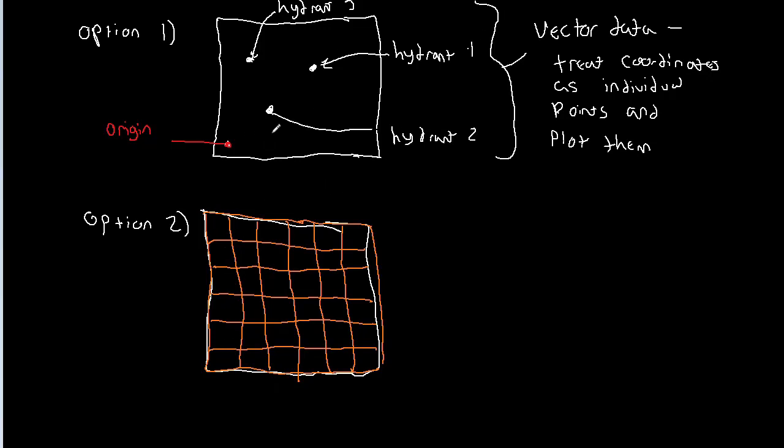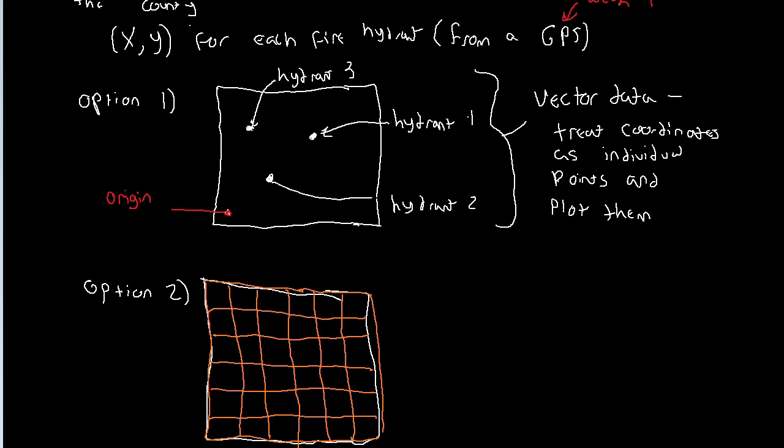And so rather than taking the x and the y of each hydrant, let me scroll up just a little bit if I can so we can see everything. So instead of taking the x and the y of each fire hydrant and plotting it specifically, instead what we would do is we would find the grid cell that corresponds to each hydrant and we would assign that a value.